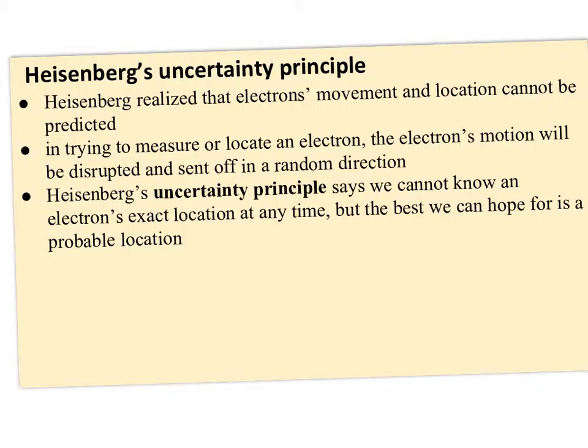Heisenberg's uncertainty principle simply says an electron's movement and location can never be predicted because when you try to measure or locate an electron, whatever equipment you're going to use, you're going to disrupt the electron and send it off in another random direction. So his uncertainty principle says that at best, we can hope for a probable location, but we're never going to know the exact location at any given time.